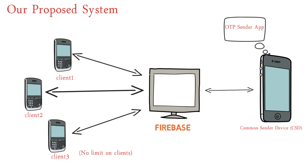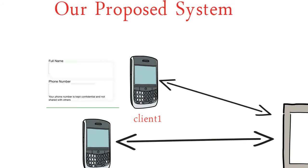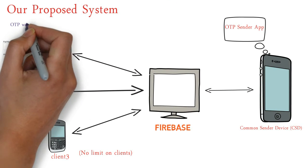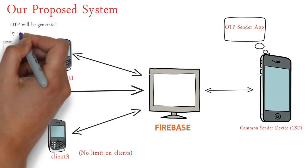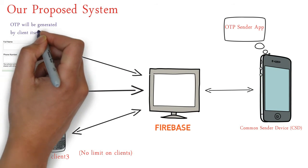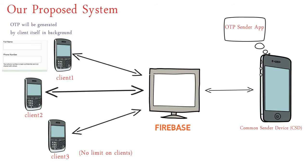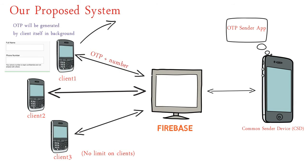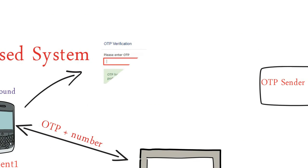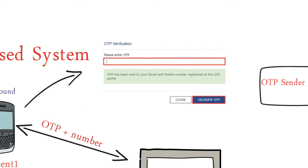Let's see what happens when Client 1 submits a phone number. When Client 1 submits the phone number, the OTP will be generated by the client in the background and stored. After that, the client will send that OTP to Firebase, and the client will be looking at a screen like you are seeing — an OTP verification screen — basically waiting for the OTP.